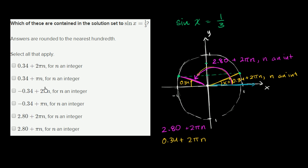Let's see which of these are at least a subset of this. We look at 0.34 plus 2πn where n is an integer—that's exactly what we wrote. If n is a positive integer, we go around this way and keep getting back to the same point. If it's negative, we go around that way. That's definitely in the solution set. 0.34 plus πn: if we add π instead of 2π, we'd get right over there, and the sine of that would be negative 1/3, not positive 1/3. We can rule that out.